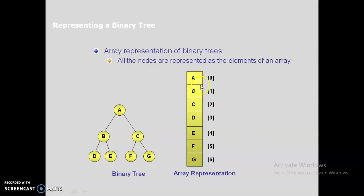However, if a node has A at the root, then B, then E, then C and G, the positions of D and F are vacant in the array representation. That means we are having wastage of space. That is why we move on to linked list representation.